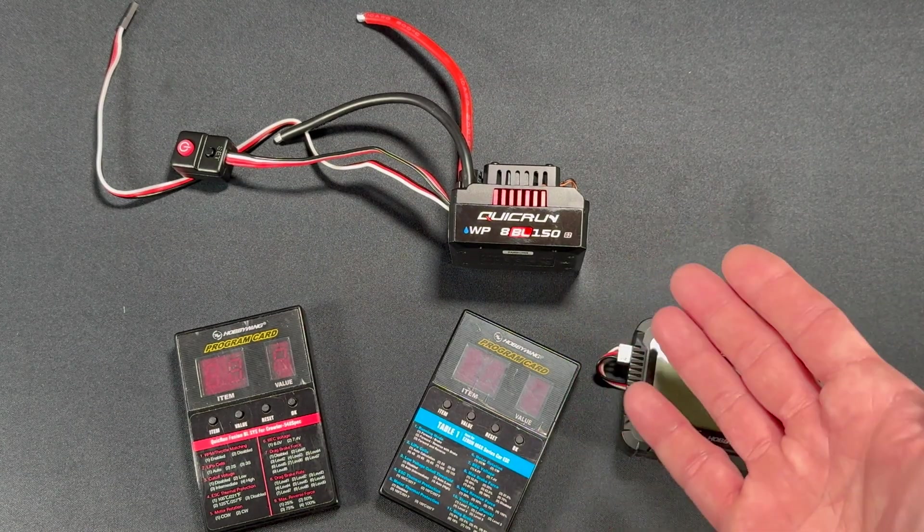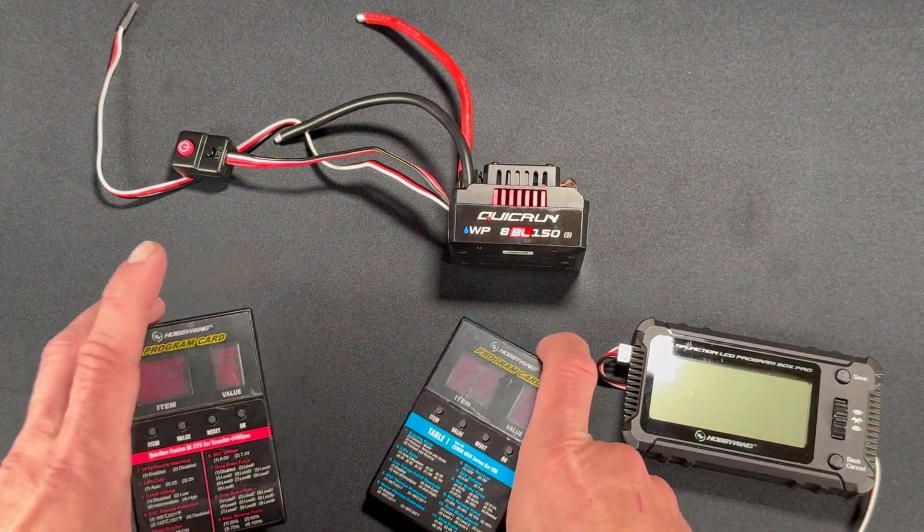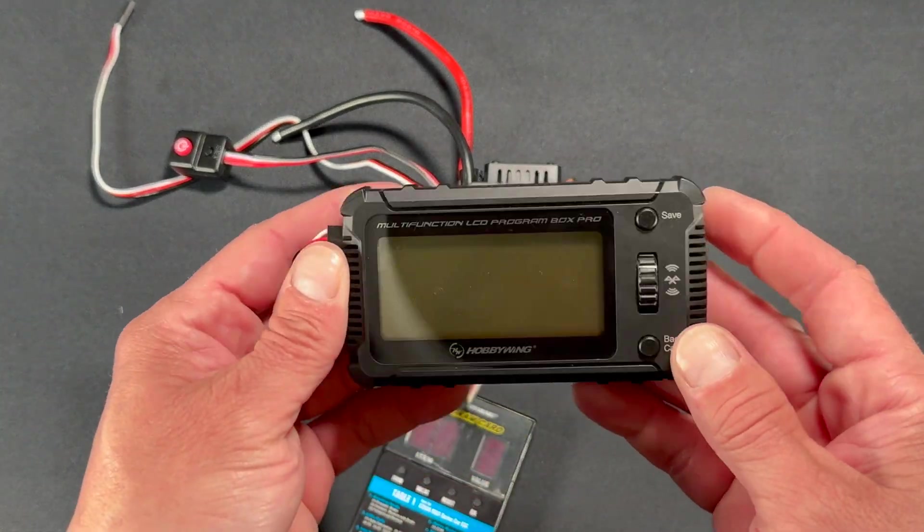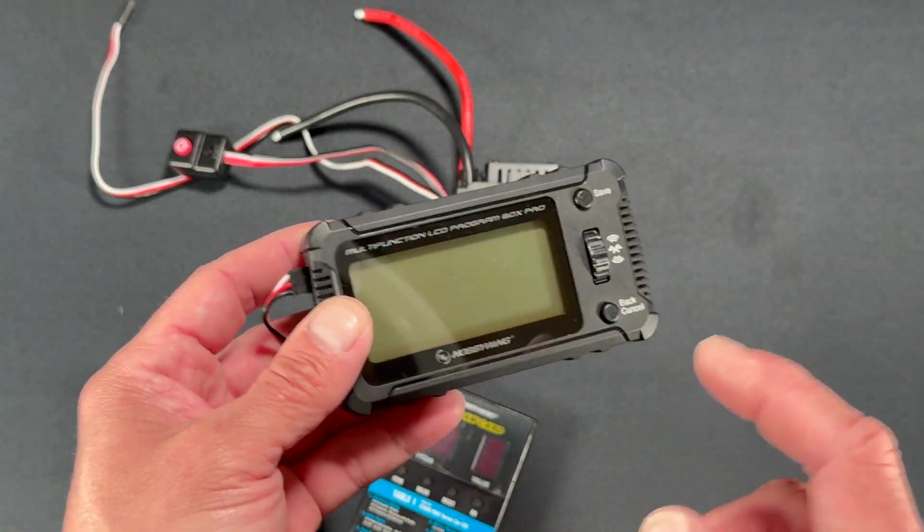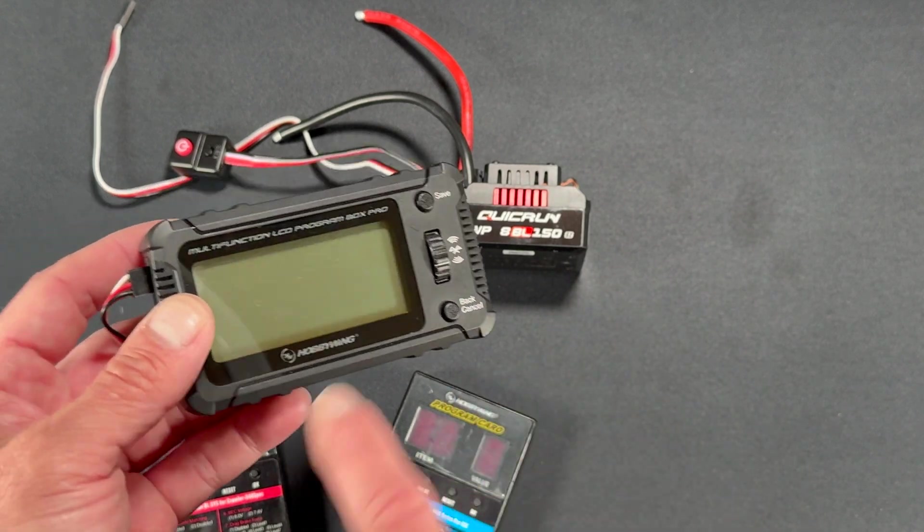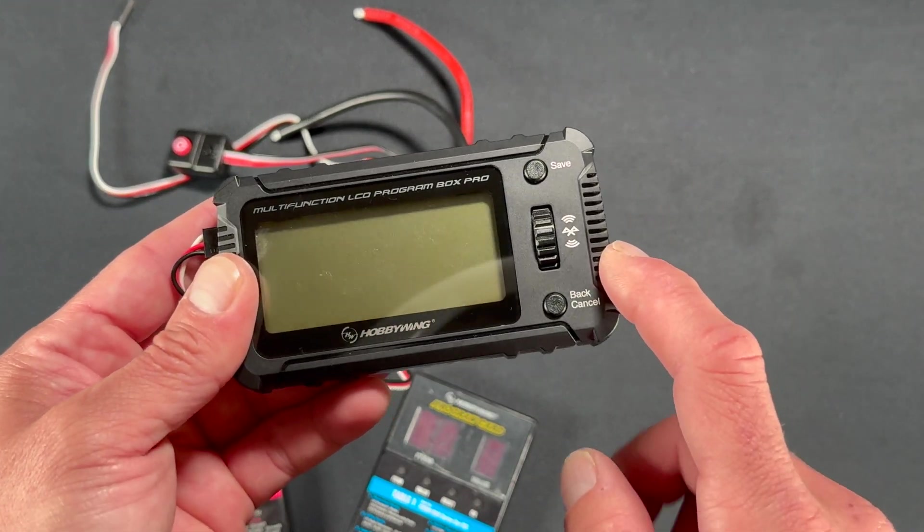It will calibrate and work fine on default settings right out of the box with nothing extra needed. But there is no built-in onboard programming using the set button and the lights. That is only used for calibration. The G2 series of QuickRun Speed Controls will work with any of the LED program cards or the new LCD Program Box Pro.